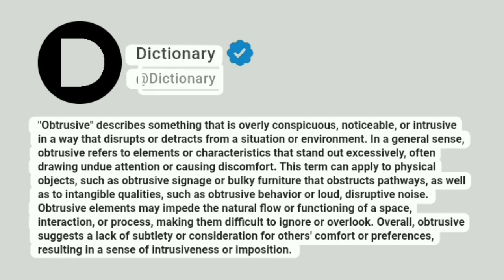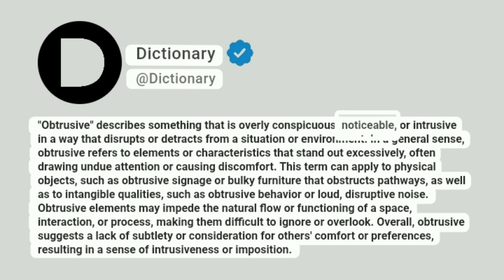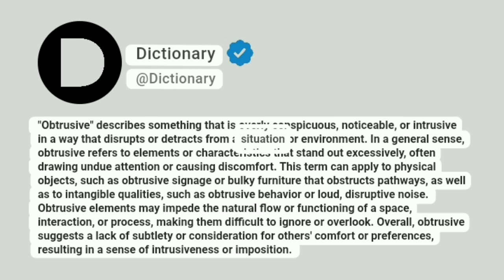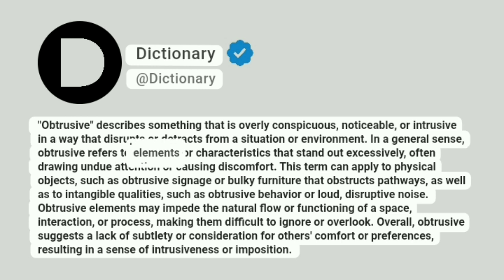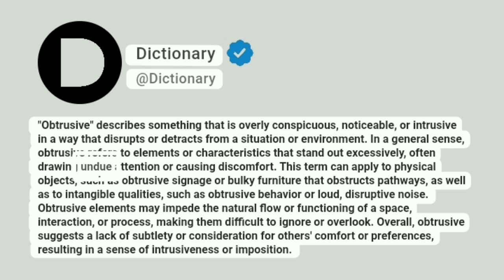Dictionary. Addictionary. Obtrusive describes something that is overly conspicuous, noticeable, or intrusive in a way that disrupts or detracts from a situation or environment. In a general sense, obtrusive refers to elements or characteristics that stand out excessively, often drawing undue attention or causing discomfort.